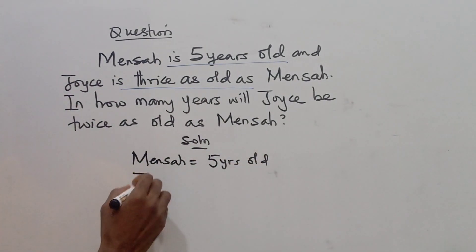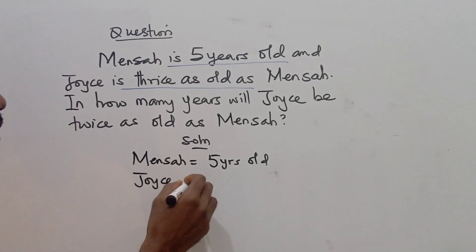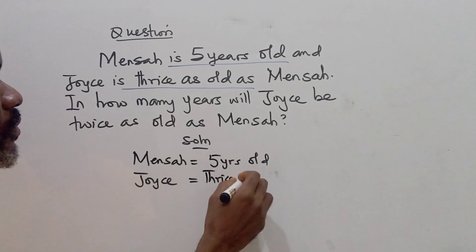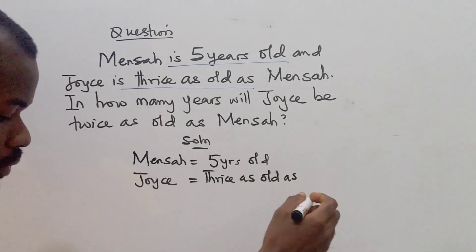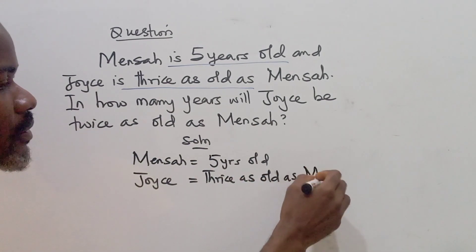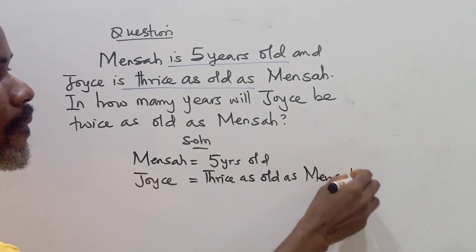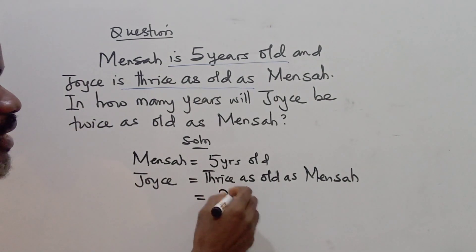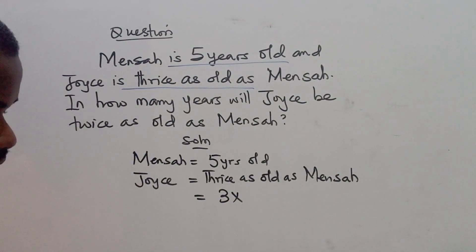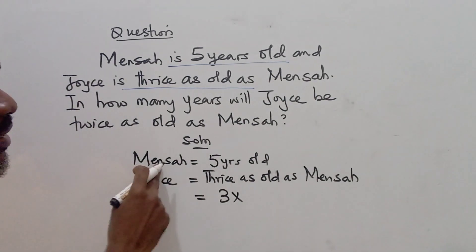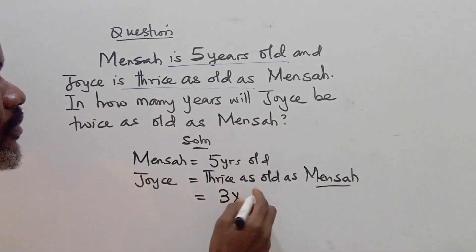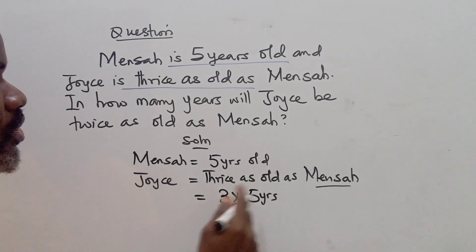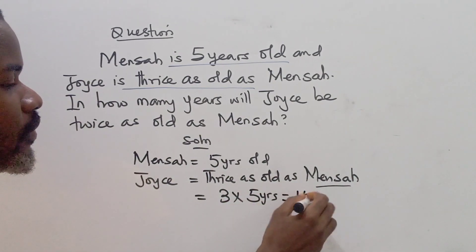And the equation will say: Joyce is equal to twice as old as Mensa. Twice as old as Mensa means 2 times Mensa. Twice as old as Mensa — Mensa is 5 years. So when Mensa is 5 years old, Joyce is 15 years old.